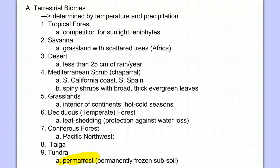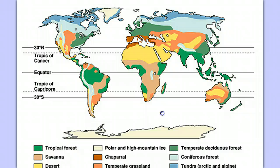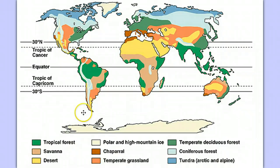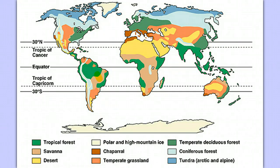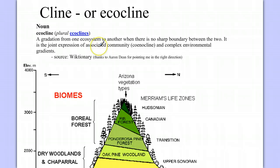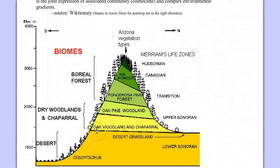Let's look at our aquatic biomes, but before we do that, let's look at a map showing how these different biomes are distributed across the planet. Again, we see a very heterogeneous distribution with some patchy areas, but basically almost every continent has each of these biomes. And if we were to zoom in into any one of the boundaries between these biomes, we'd see a cline or an eco-cline — a gradual gradation from one ecosystem to another, where we don't always see sharp boundaries as one grades into the other and gradually changes.